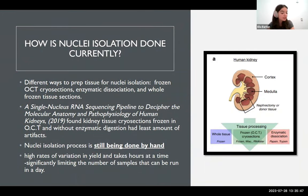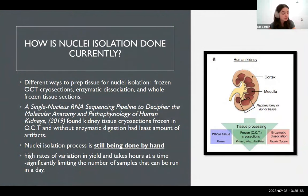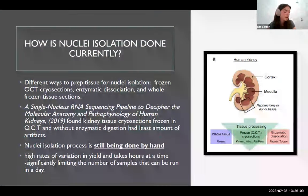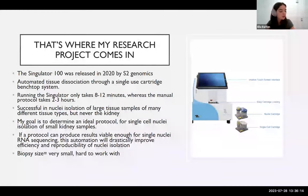Within this article, it was found that kidney tissue sections frozen in OCT was the best tissue preparation method that resulted in the fewest amount of artifacts. Although the preferred tissue preparation methods have been discovered, the nuclei isolation process is still being done by hand, resulting in high rates of human error and taking hours at a time, significantly limiting the amount of samples that can be run in a day. This gap in knowledge of how to make nuclei isolation more efficient is where I come in.